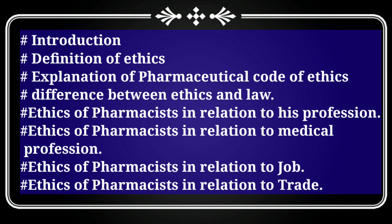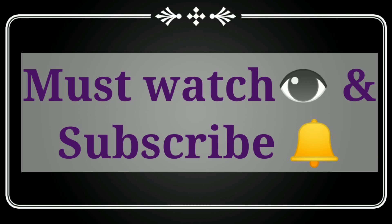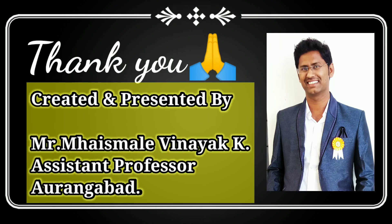Now we will discuss some exam questions related to this chapter — pharmaceutical code of ethics — as asked in MSBTE exams: 1) Define ethics and law. 2) Write a note on pharmaceutical code of ethics. 3) Differentiate between law and ethics. 4) Explain the ethics of a pharmacist in relation to his profession. 5) Explain ethics in relation to medical profession. 6) Explain ethics in relation to job. 7) Explain ethics in relation to trade. 8) Write a note on clandestine arrangement. 9) How to handle a prescription. Please prepare these topics and share this video with friends.